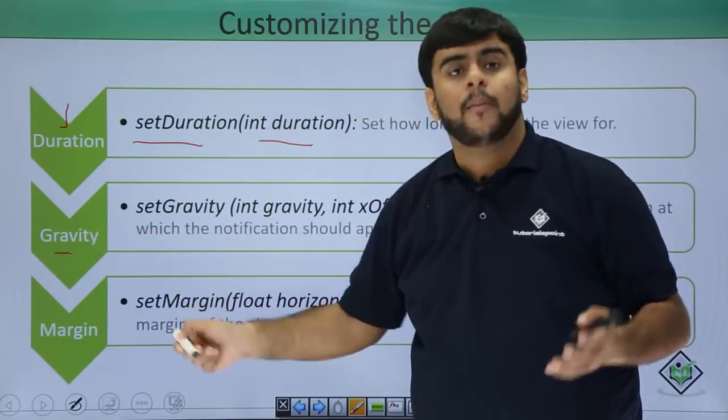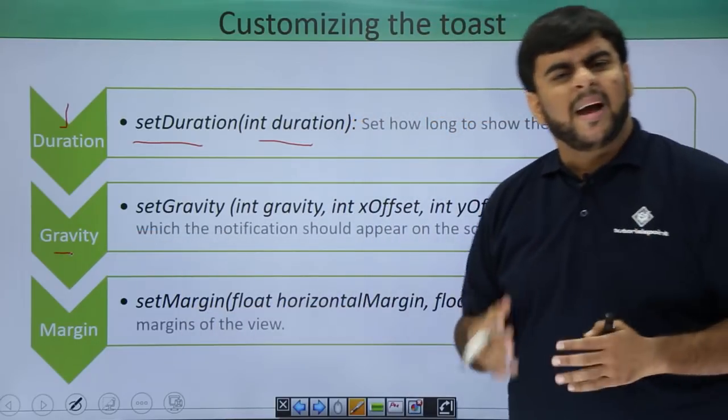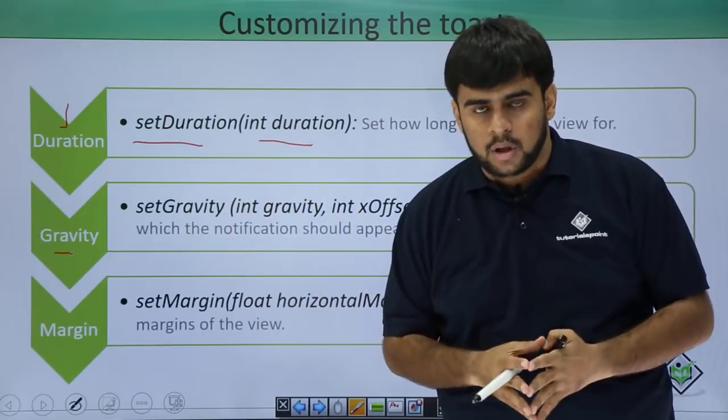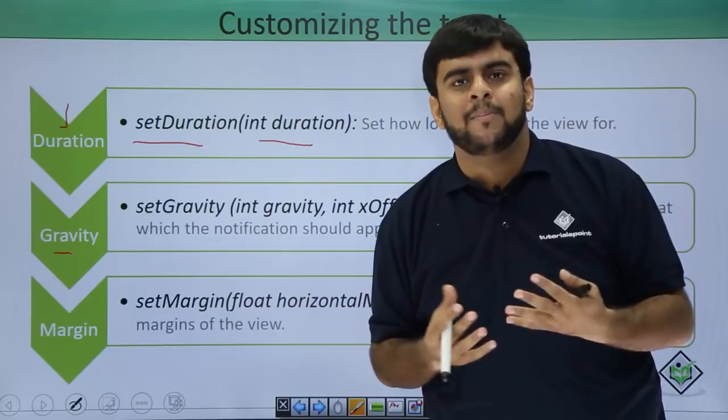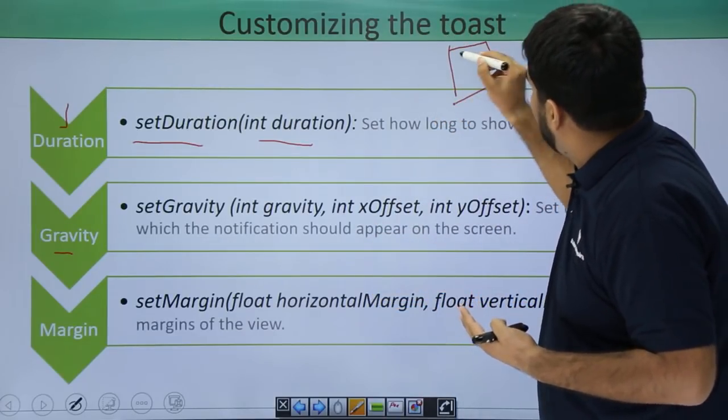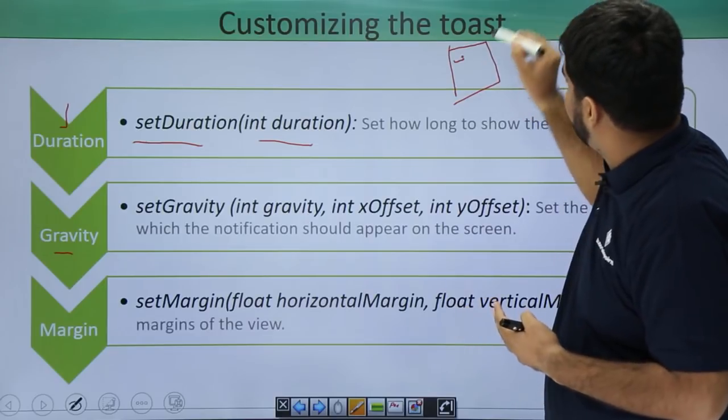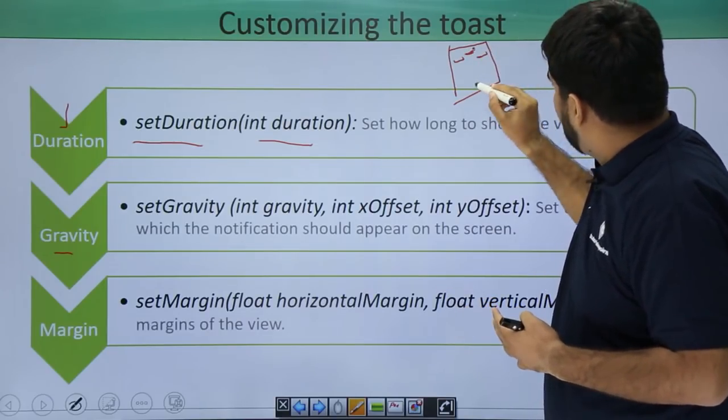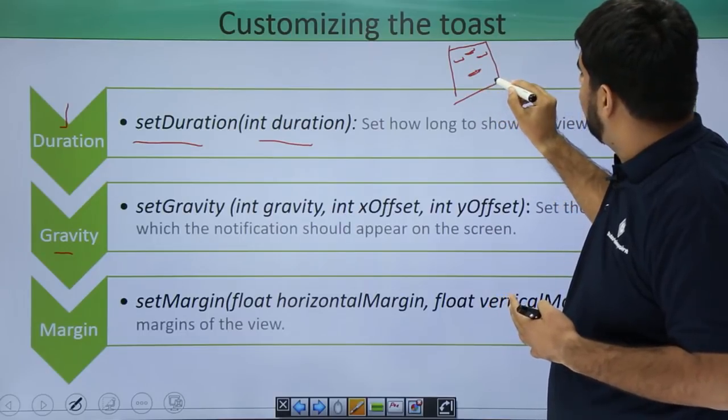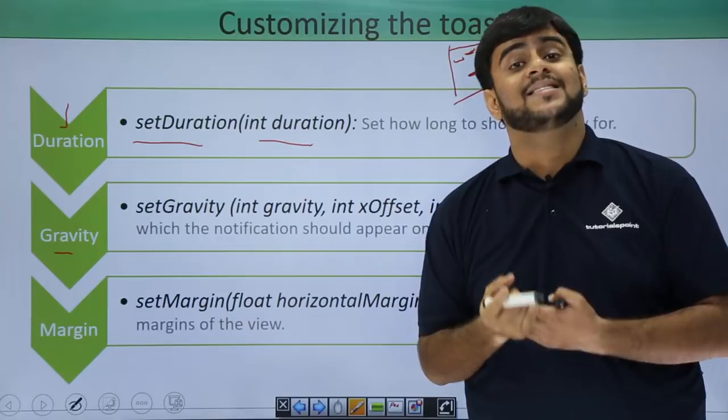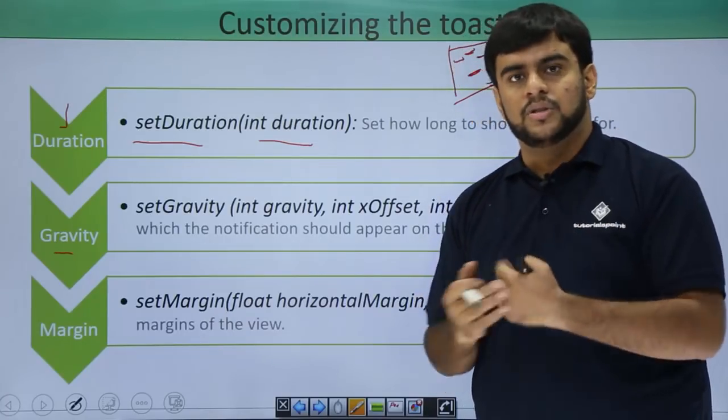Then next is gravity. What do we mean by gravity? By gravity, I mean at what position of the screen I want my toast to be shown. By position, I simply mean I want my toast, like if this is my screen, I want my show toast on the left, on the right, in the top or in the center or in the right.